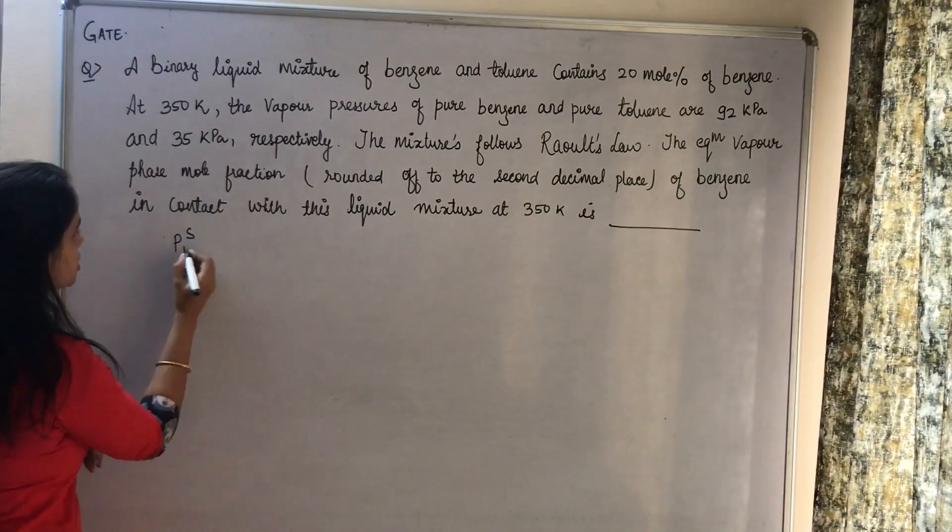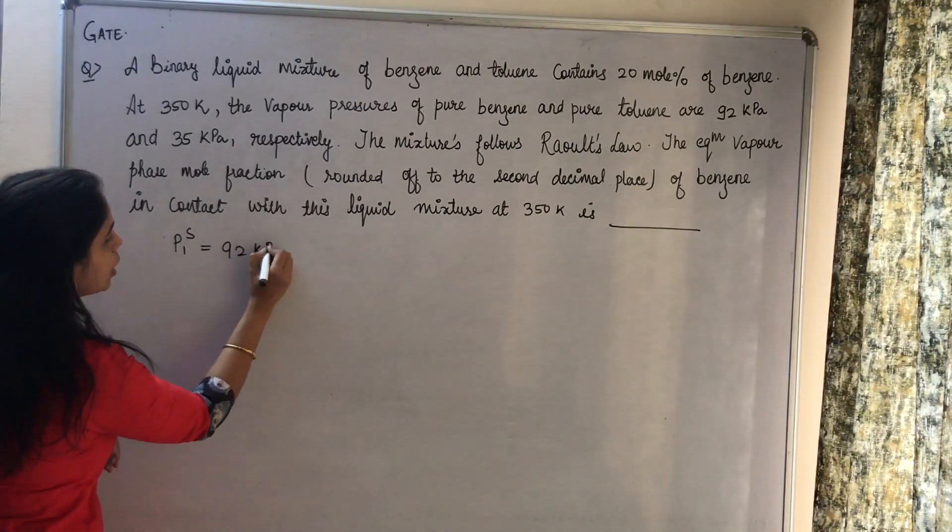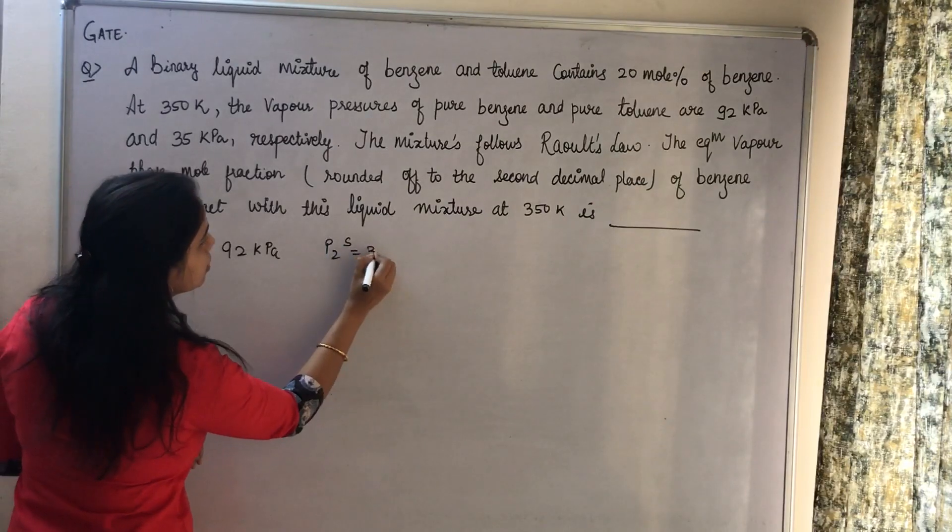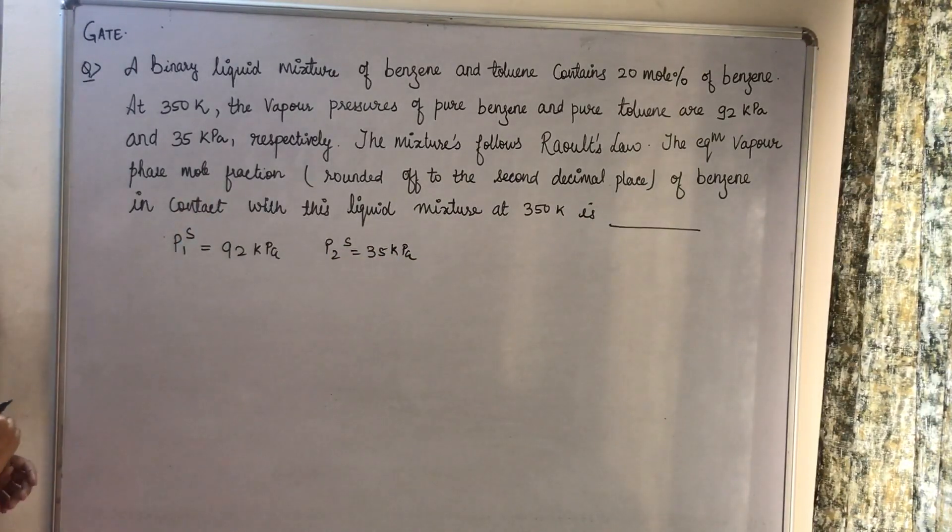Let's take component 1 as benzene, so the vapor pressure P1S is 92 kilopascal, and P2S for toluene is 35 kilopascal, respectively.